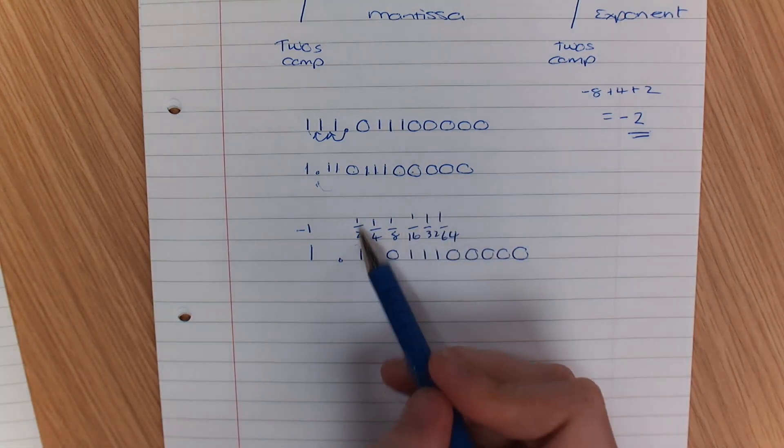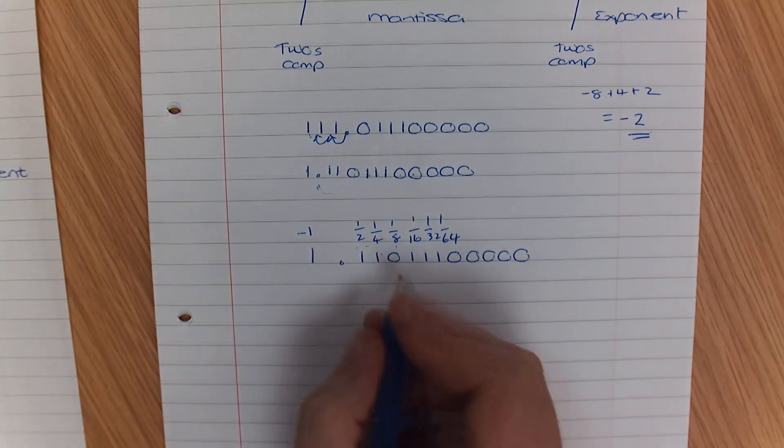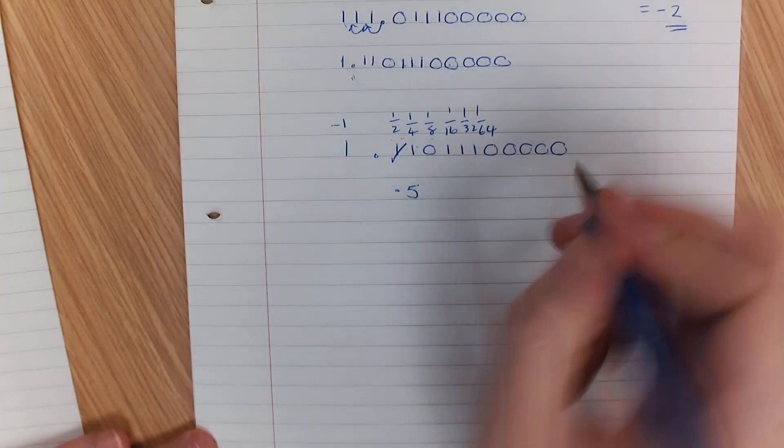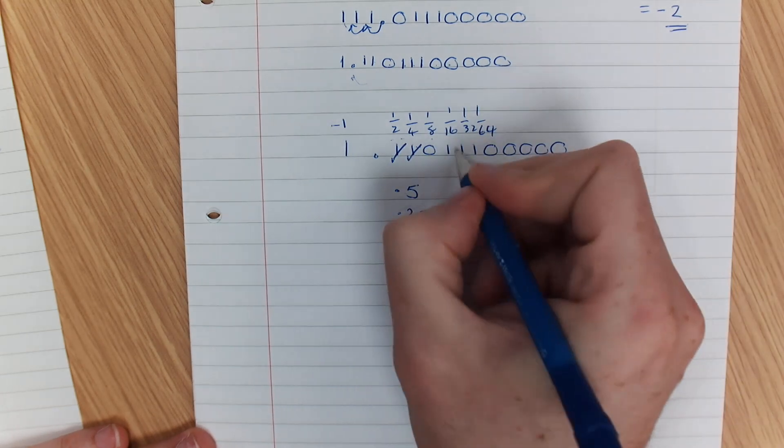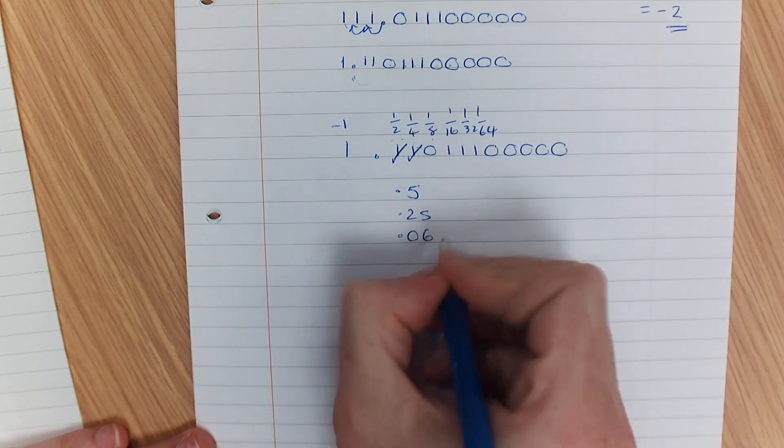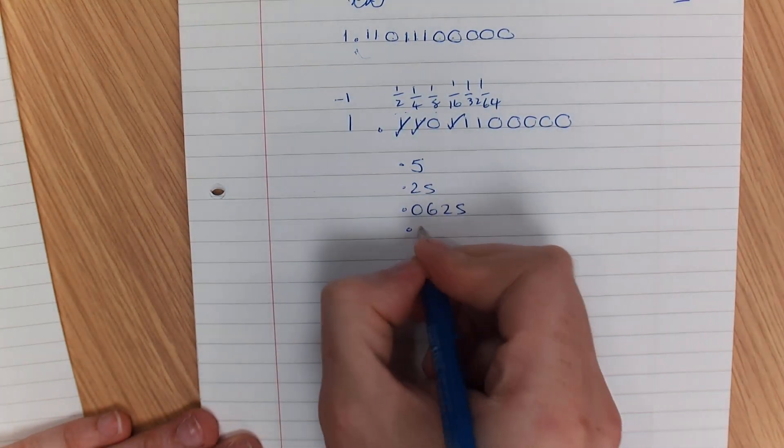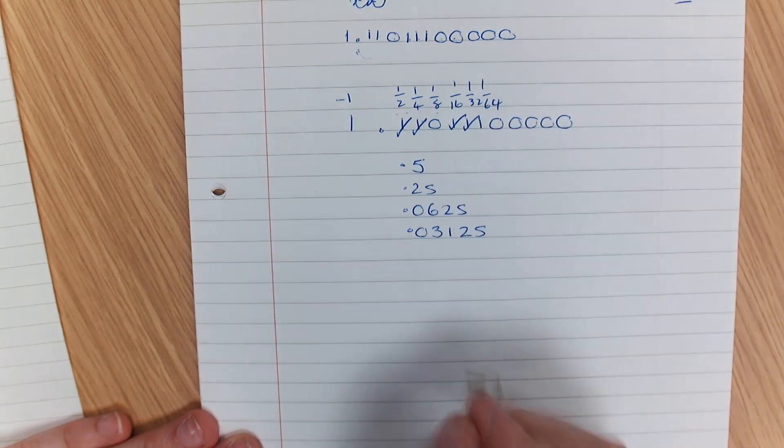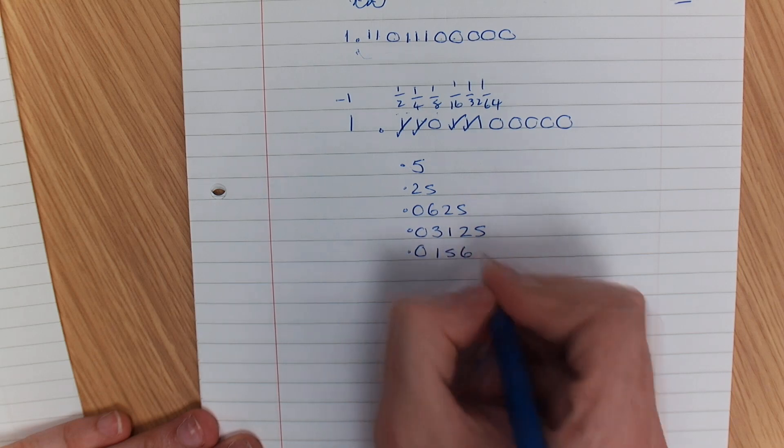Now if you work that out, you can do 1 divided by 2, 1 divided by 4, 1 divided by 8, and 16, and 32, and so on to work out what those decimals are. So what you should end up with is 0.5, 0.25, 0.0625, 0.03125, and 0.015625.